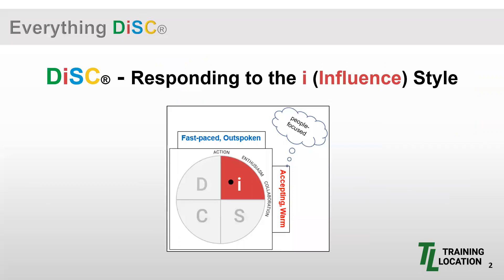In today's DISC lesson, we will discuss responding to the I, or influence style — shifting from understanding the I style to more of interacting and responding. I'll address today's topic from multiple perspectives: those not familiar with DISC technology or jargon, those with some understanding of the four styles, and those who know DISC, have taken the assessment, and know their own style. I'll review I-specific information, then provide examples of responses to daily situations.